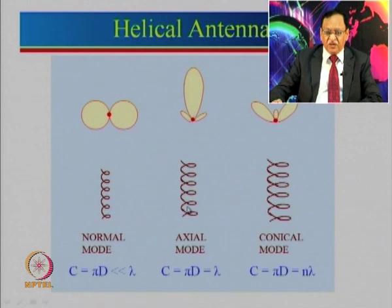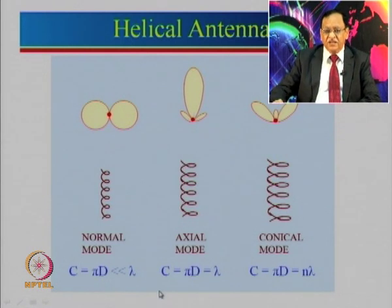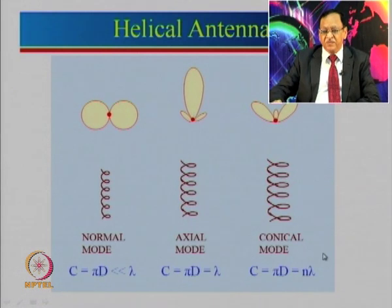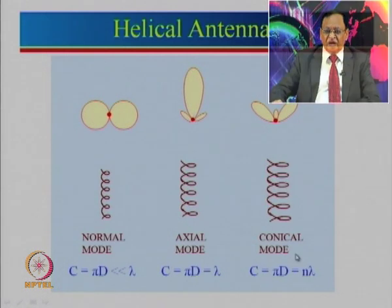The other mode is known as axial mode, where maximum radiation is along the helical axis. For axial mode the condition is that the circumference pi×d equals lambda. There is also a conical mode where the circumference becomes n times lambda, where n is 2, 3, or more. However, this mode is very rarely used, so in our coverage of helical antennas we will focus on the normal and axial modes.